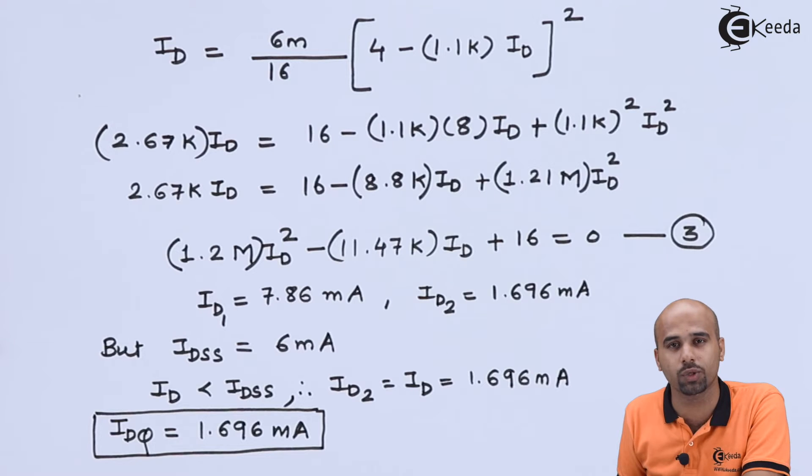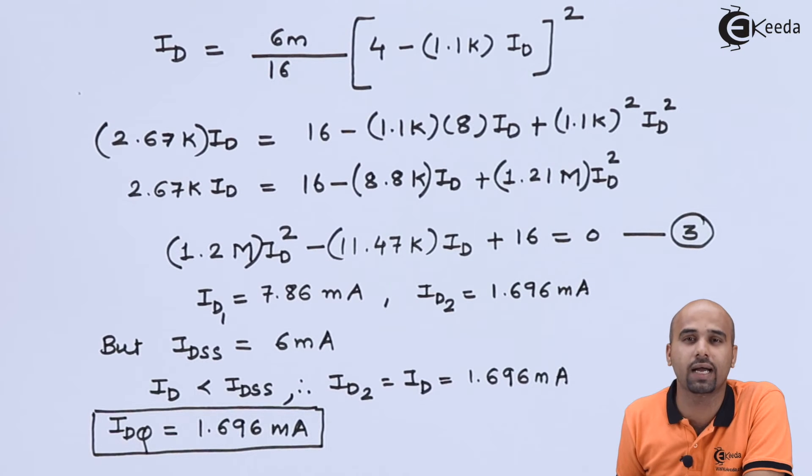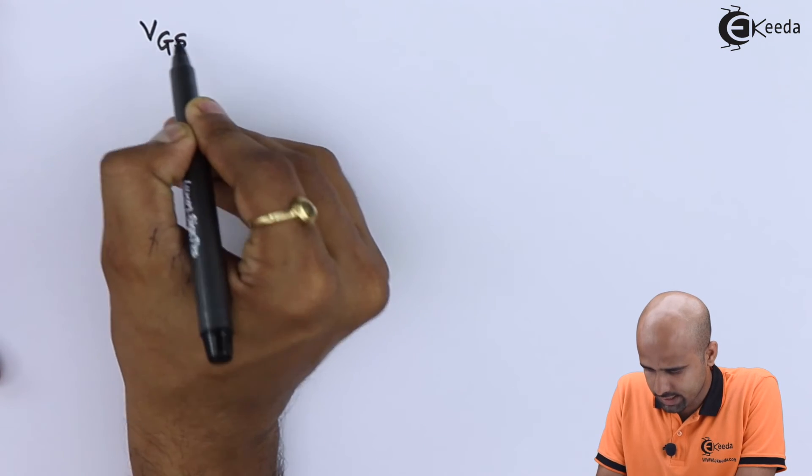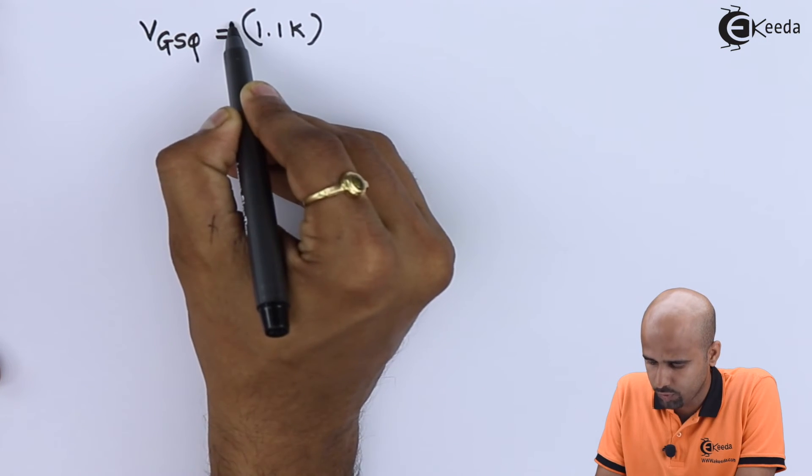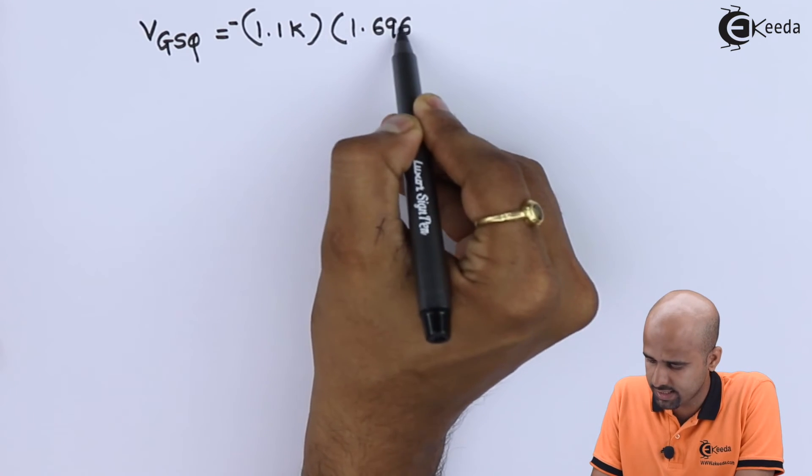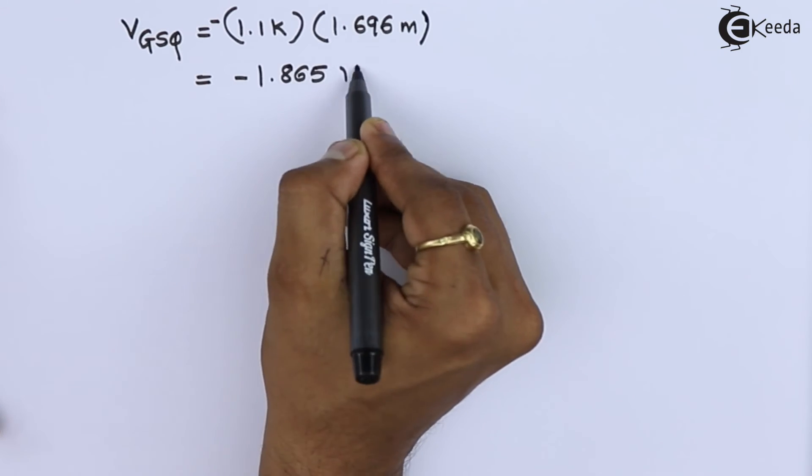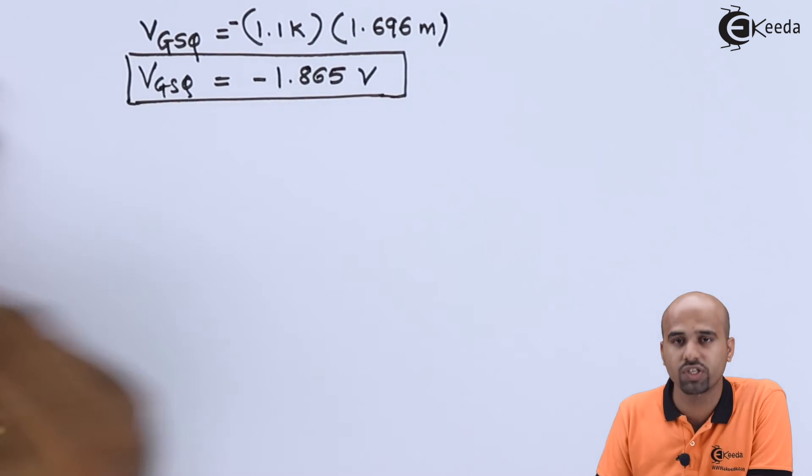I know that from equation number 1, VGS is equal to minus ID multiplied by 1.1k. We know that from equation number 1 that VGS is function of ID in the form of factor 1.1k. So VGS is equal to 1.1k, obviously it should be with minus sign, multiplied by 1.696 milliampere. The answer will be minus 1.865 volts. This is your second finding.